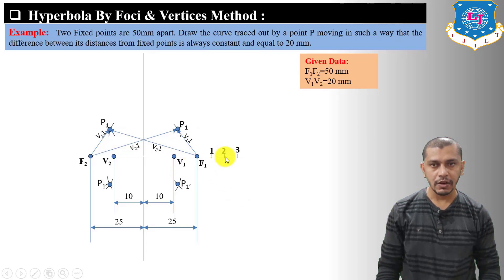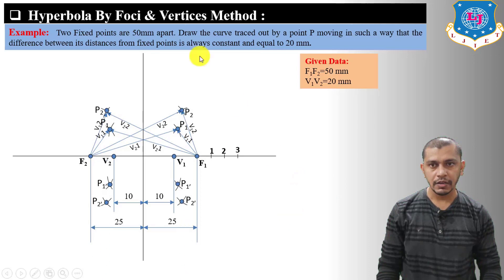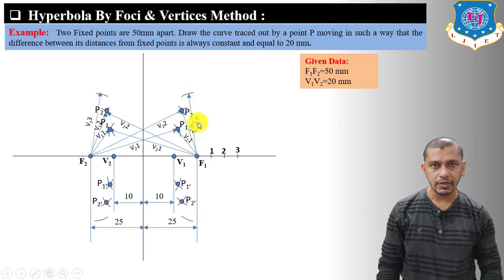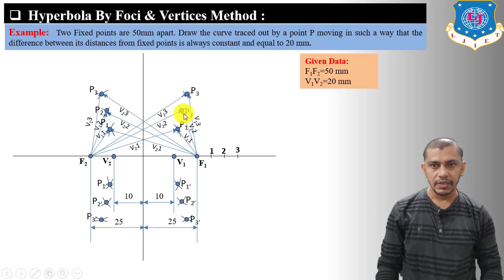Measure V1 to 2 on the compass and draw arcs from F2 on both sides. Measure V2 to 2 and draw arcs from F2 and F1 to get intersections. Mark points P2 and P2'. Measure V1 to 3 and draw arcs from F1 on both sides; measure V2 to 3 and draw arcs from F2 to get intersections; from F1 on both sides to get intersections. Mark points P3 and P3'.